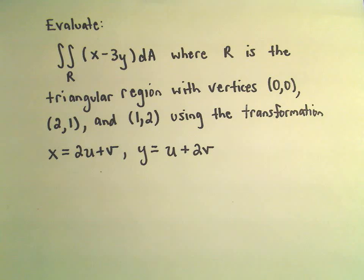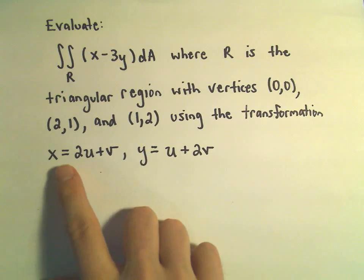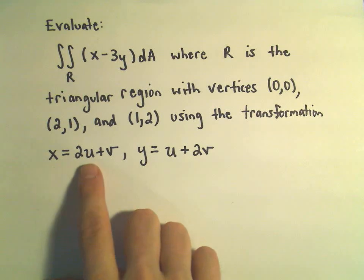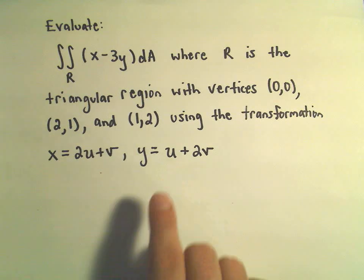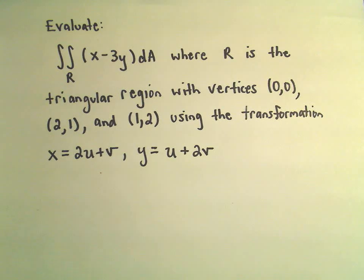R is the triangular region with vertices at (0,0), (2,1), and (1,2). We're going to use the transformations x equals 2u plus v, and y equals u plus 2v.